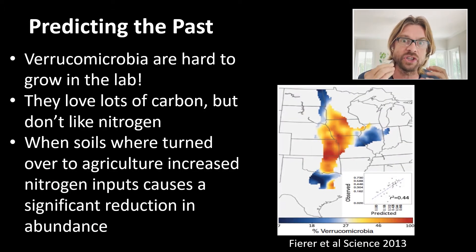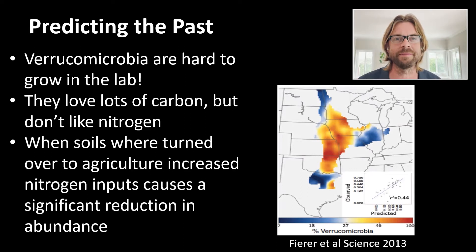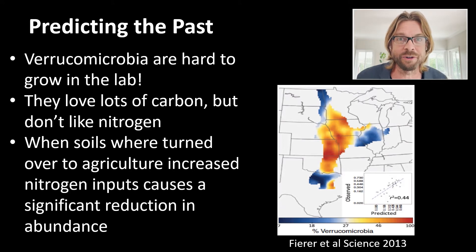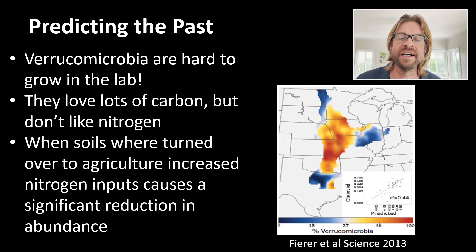Interestingly, the bacteria that dominates that central range of the prairie — the area with very low diversity — is the Verrucomicrobia, a phylum of carbon-loving bacteria. They don't like it when you add a lot of nitrogen. So if you were to come in and agriculturally revolutionize this soil, till it up and pump in lots of nitrogen, it's going to select against the Verrucomicrobia and select for bacteria more able to survive in a high-nitrogen environment.